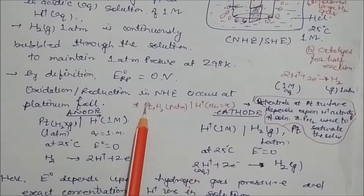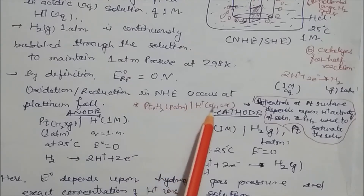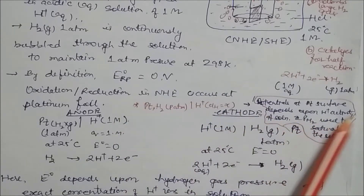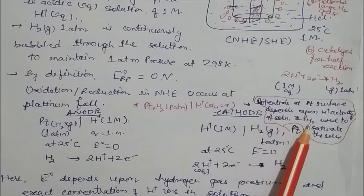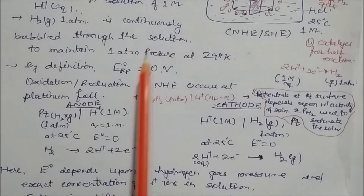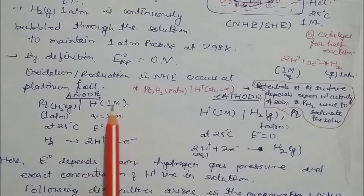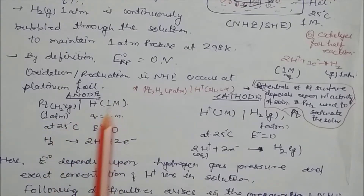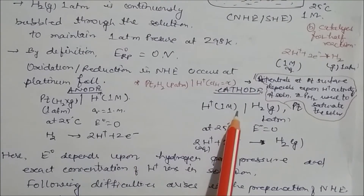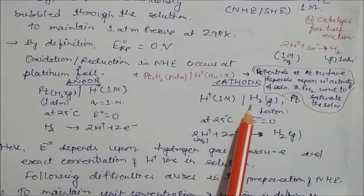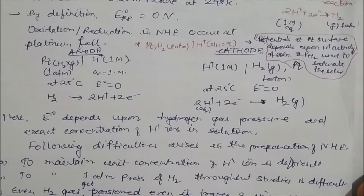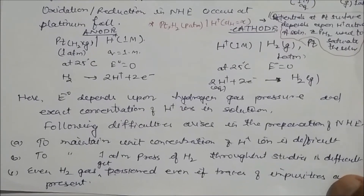We write the cell notation as: Pt | H₂(P atm) | H⁺(activity = X). The potential at the platinum surface depends on the H⁺ activity of the solution. If using hydrogen electrode as the anode, hydrogen converts to H⁺ ions; at one molar concentration and one atmospheric pressure, E⁰ = 0 at 25°C. If used as a cathode, H⁺ ions convert to hydrogen gas. E⁰ depends on the gas pressure and the exact concentration of H⁺ ions in solution.